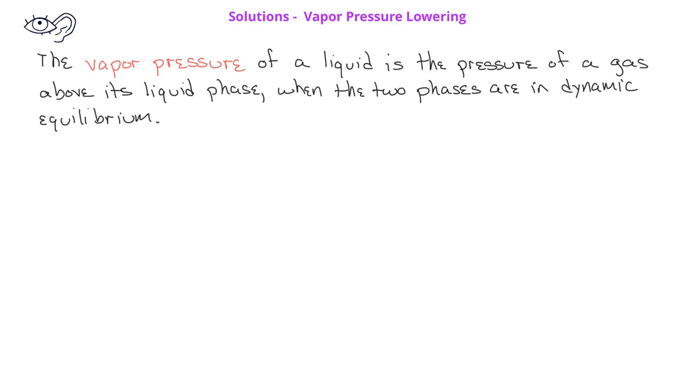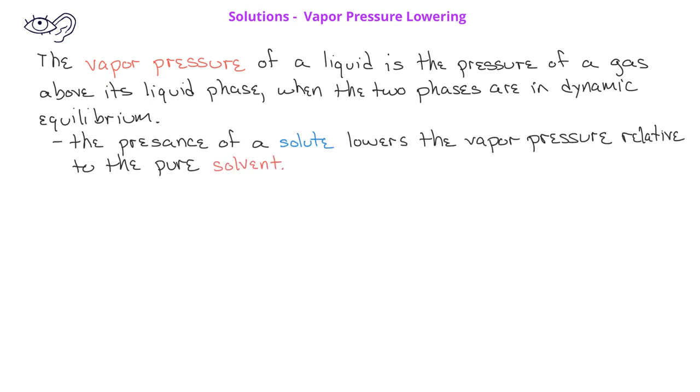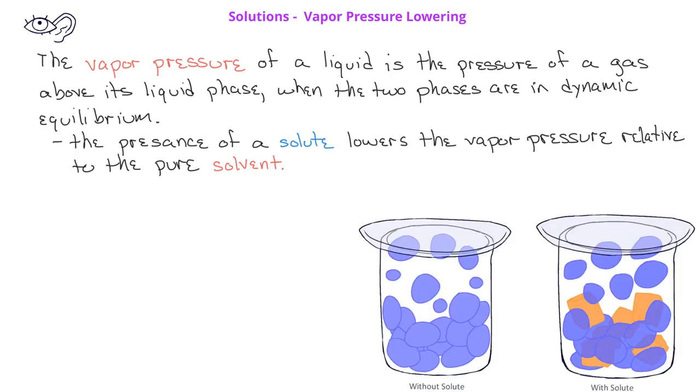When a solute is added to a solvent, the solution will have a lower vapor pressure than the pure solvent. This can be explained because we know that in the evaporation process, it's the solvent particles at the surface that are moving from the liquid phase to the gas phase.